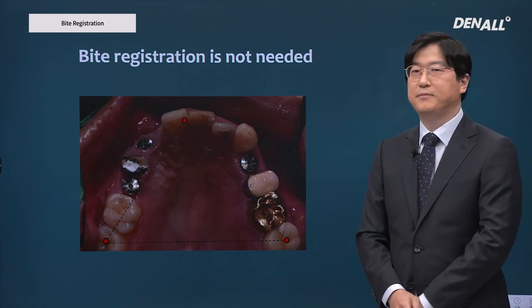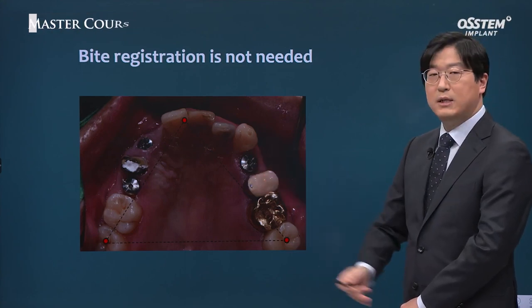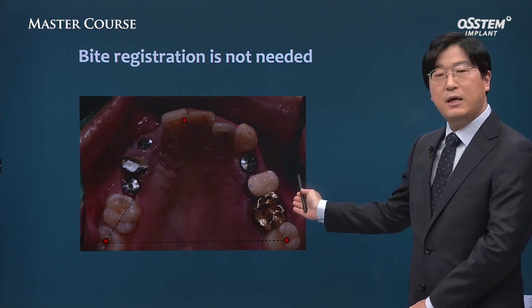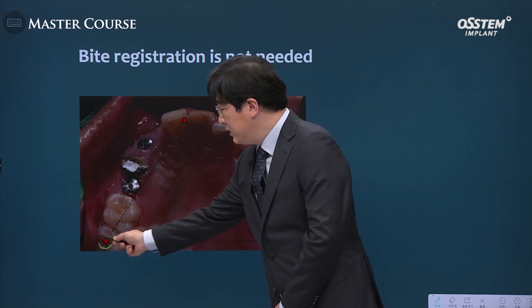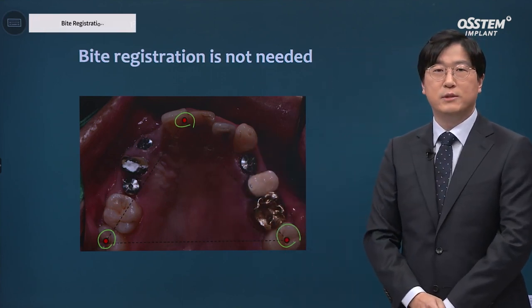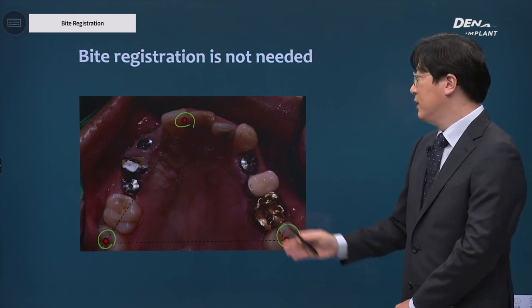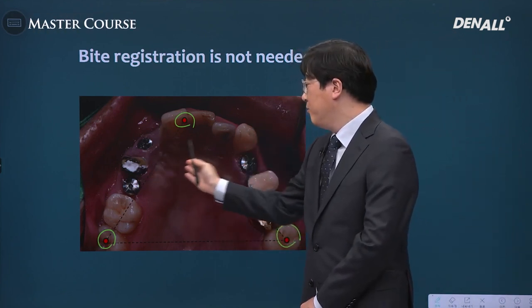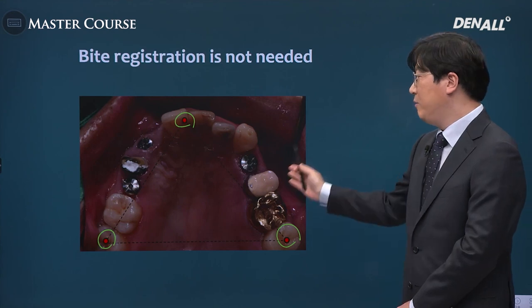Let me explain using a clinical case. In this patient, implants were placed at numbers 13, 15, and 24, with prostheses applied. Do we need to register the bite? In this patient, number 17 and 27 have stable contact points, and in the anterior region the patient also has stable contacts. Therefore, a plane is defined in a tripod shape, so bite registration is not needed for these implant prostheses — the plane is already determined.